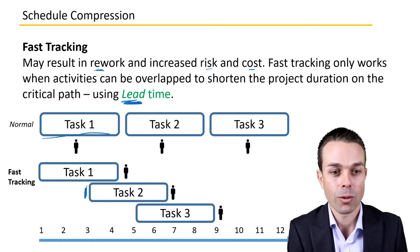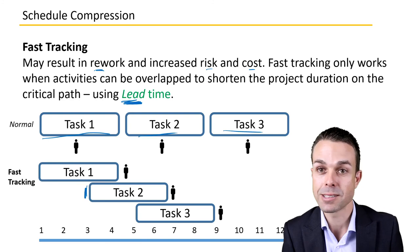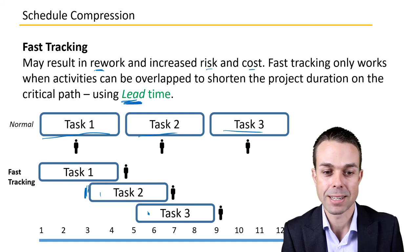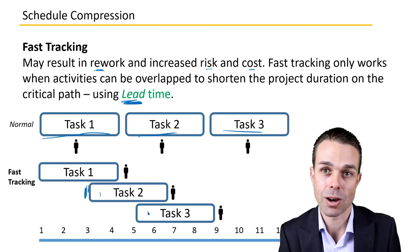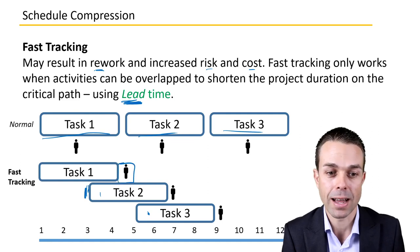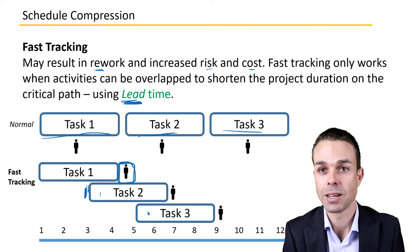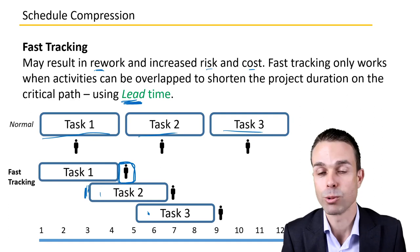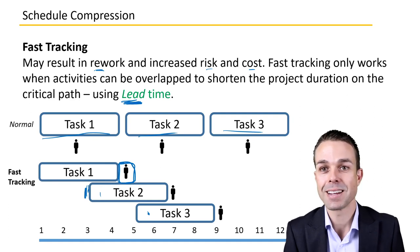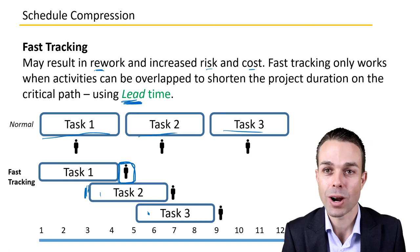For example, tasks one, two, three normally run in sequence, but now with fast tracking we're performing some of these activities at the same time. Because we're able to do that, we don't have to add more resources in this case, so the cost is a little bit less than if we were to crash the project. And that is the idea of schedule compression — crashing your schedule and fast tracking your schedule.